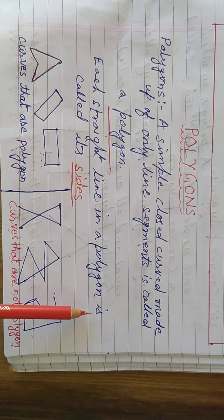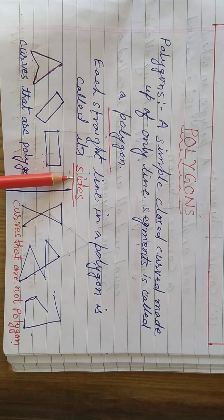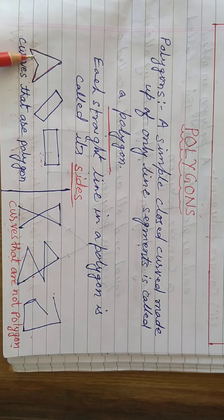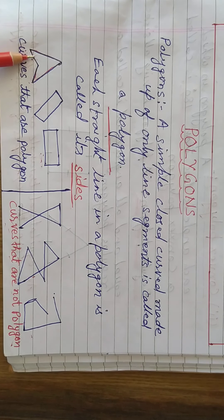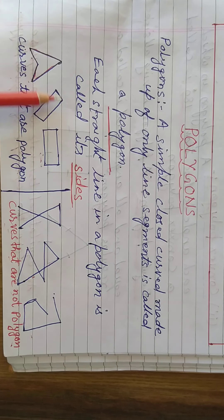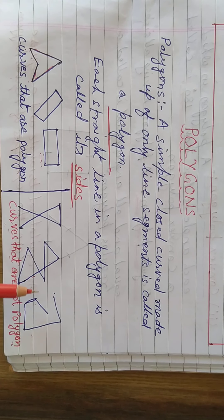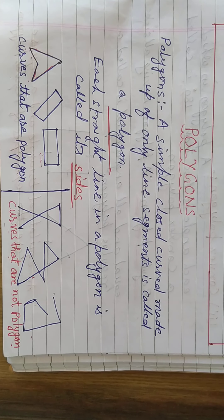Each straight line in a polygon is called its side. These figures are called polygons — curves that are polygons. And here, figures I have shown — these are not polygons; curves that are not polygons.